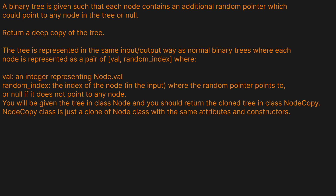A binary tree is given such that each node contains an additional random pointer which could point to any node in the tree or null. Return a deep copy of the tree. Each node is represented as a pair of value and random index, where value is an integer representing node.val and random index is the index of the node where the random pointer points to, or null if it does not point to any node. You'll be given the tree in class Node and should return the clone tree in class Node.copy, which is just a clone of the Node class with the same attributes and constructors.